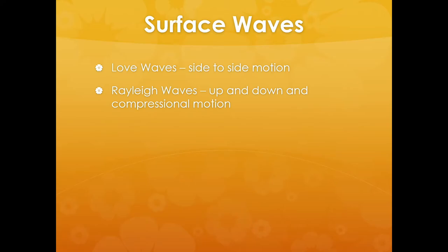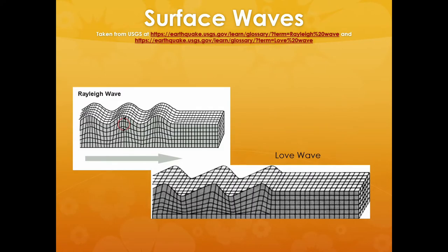We talked about surface waves — there are two basic types: Love waves, which have a side-to-side motion, and Rayleigh waves, which have up-and-down and compressional motion. Love waves can be very destructive because buildings don't do very well with side-to-side forces. Rayleigh waves are also very destructive because they combine up-and-down, compressional, and side-to-side motion — they're very complex waveforms.